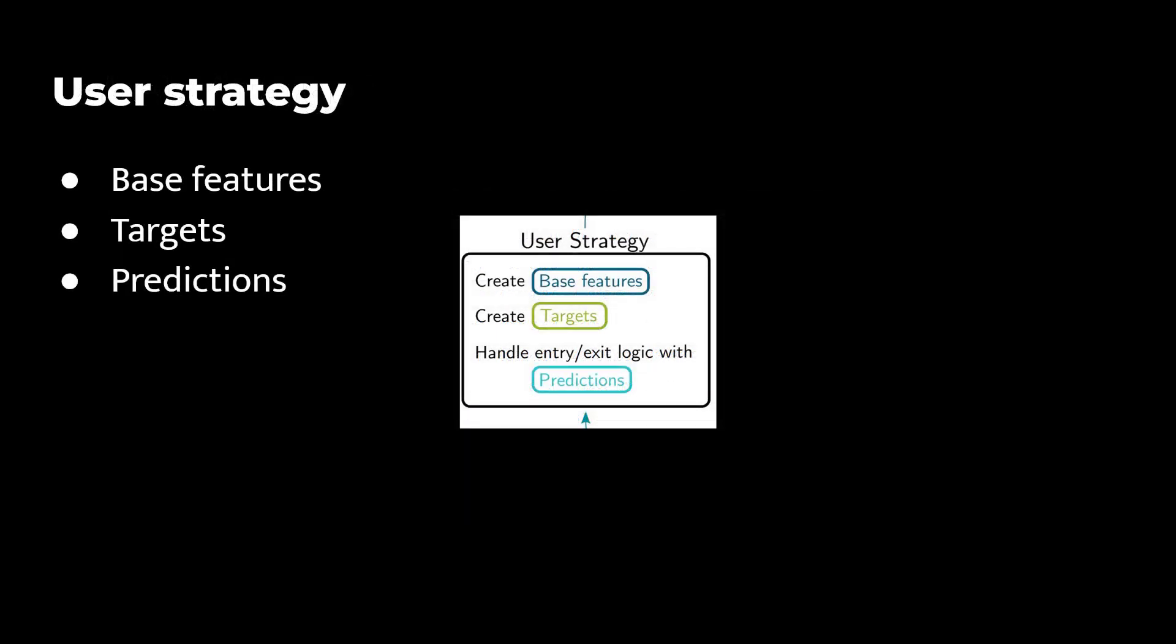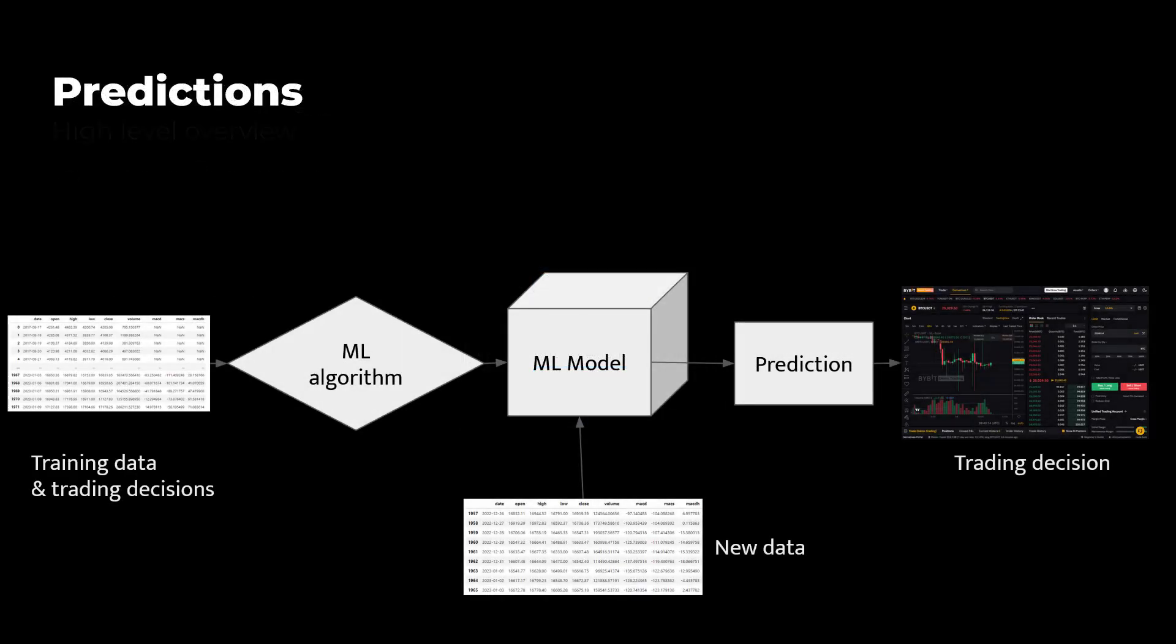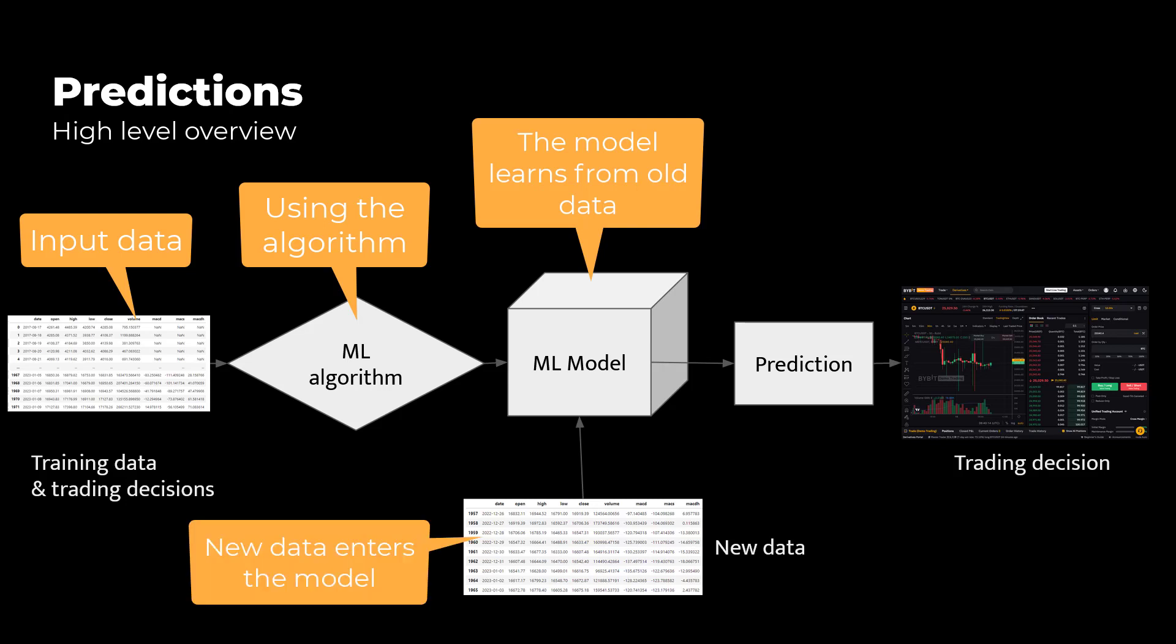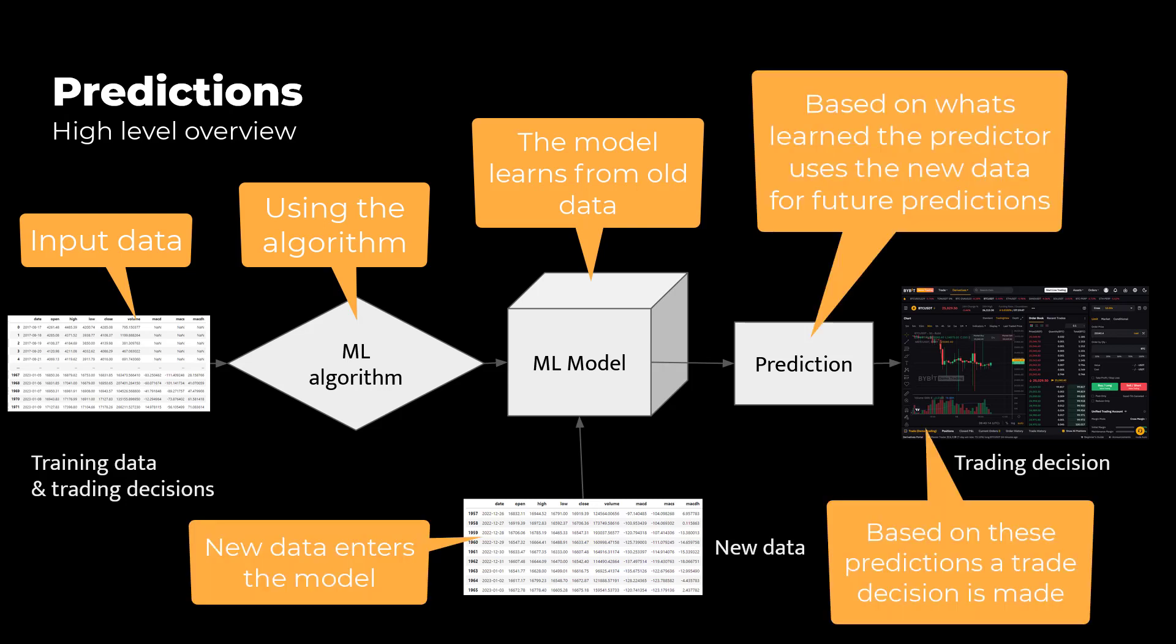Now based on this information a model can learn to recognize patterns in data and can then, in theory, create a pretty precise prediction about future events. These predictions can then be used to guide decisions such as, in our case, identifying the future price direction of a cryptocurrency pair. Based on these predictions we can decide also to enter a long or a short trade.